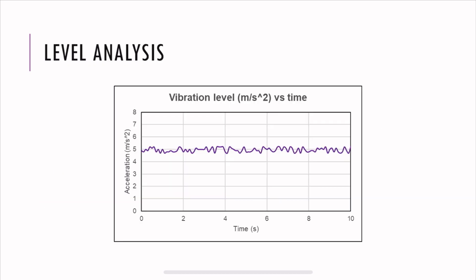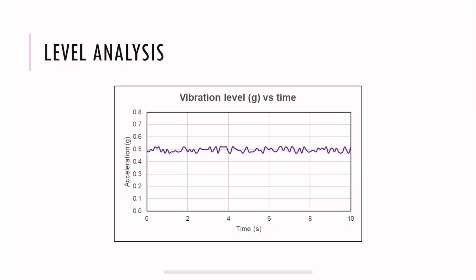First, you may see something like a level analysis, which is just how the vibration level is varying with respect to time. So on the x-axis, we have the time scale. On the y-axis, we have the acceleration. In this case, it's meter per second squared. We see how it's varying with respect to time. But we can see the same y-axis in a different unit, which is G.